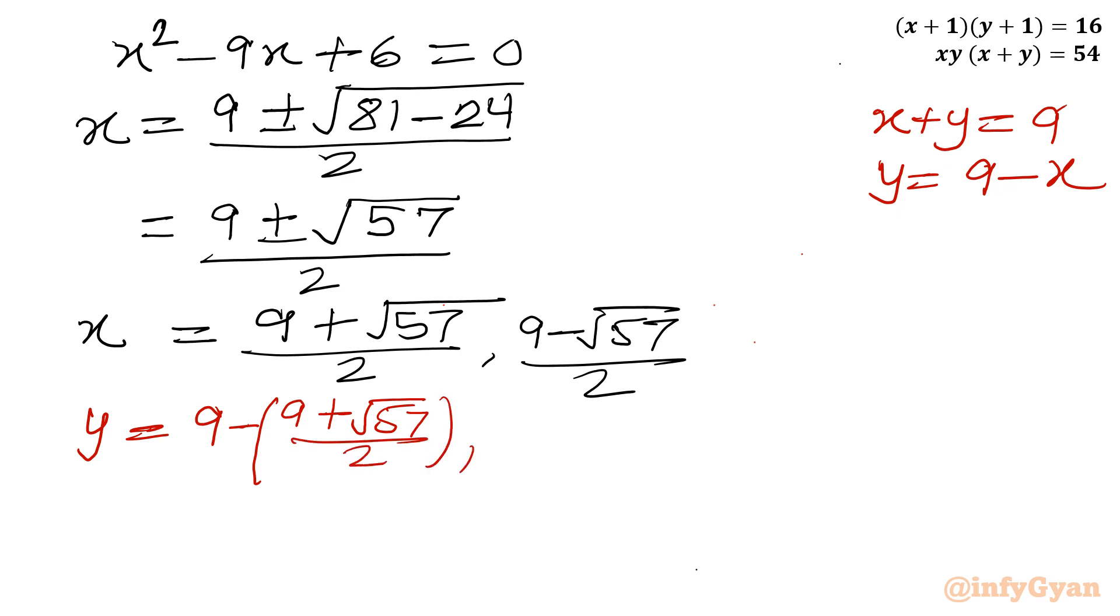The y value will be 9 minus (9 - √57)/2. So if I will simplify: 18 minus 9 is 9, so (9 - √57)/2.